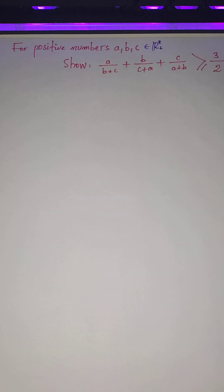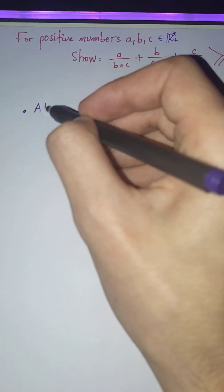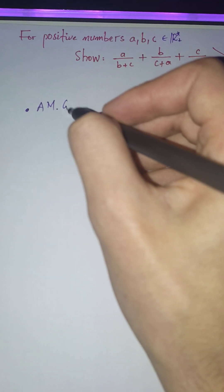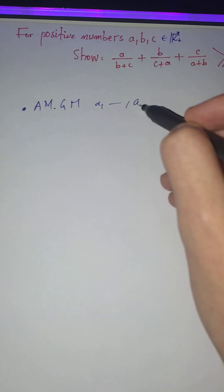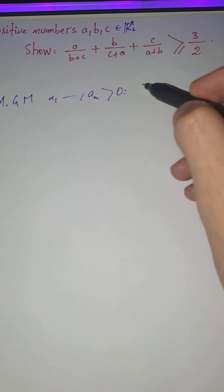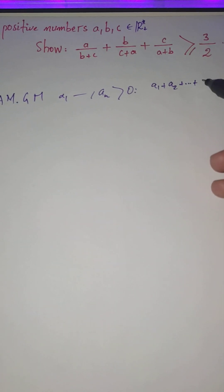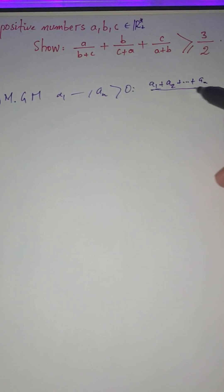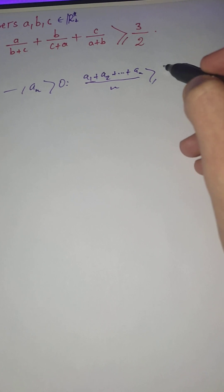So, a reminder of AM-GM inequality is that if we have a1 through an that are strictly positive, the arithmetic mean (a1 plus a2 plus etc. over n) is bigger than or equal to the geometric mean (the nth root of their product).